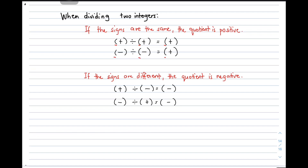So that's our pattern. Now, if the signs are different, the quotient is negative. Look at this pattern — one is positive, the other is negative, and yung quotient nila is a negative integer. And when we have negative and positive, obviously those signs are different, ang mangyari, their quotient is negative.